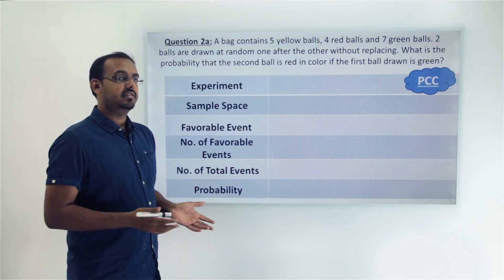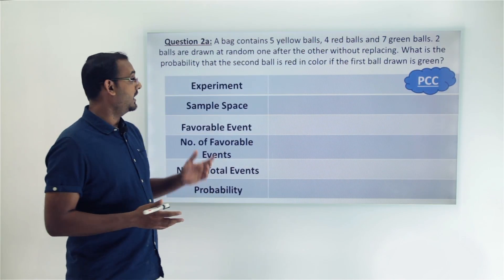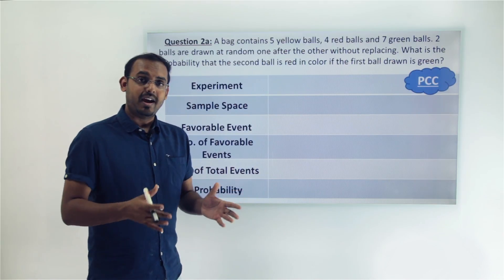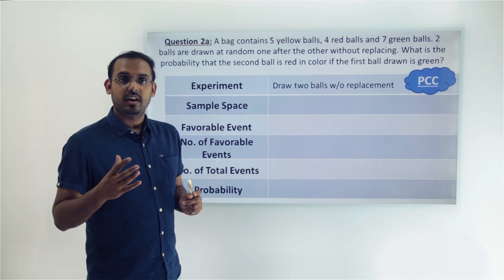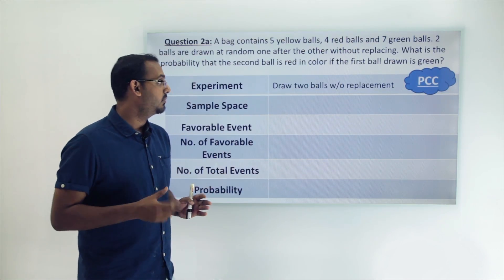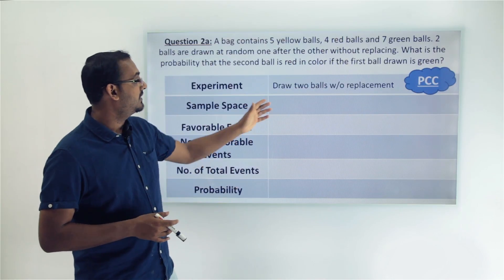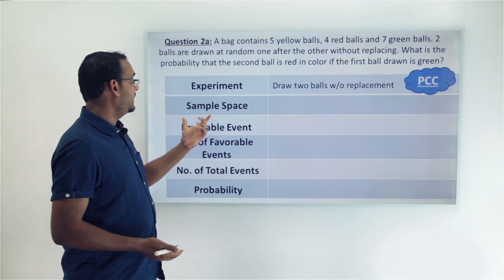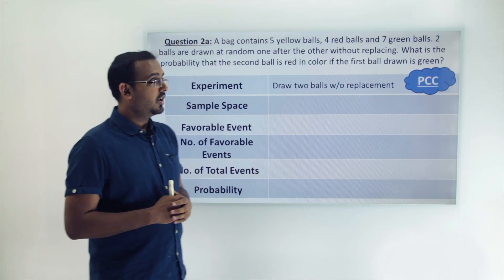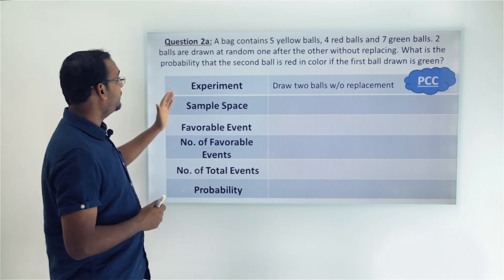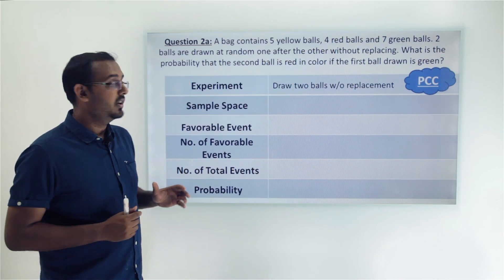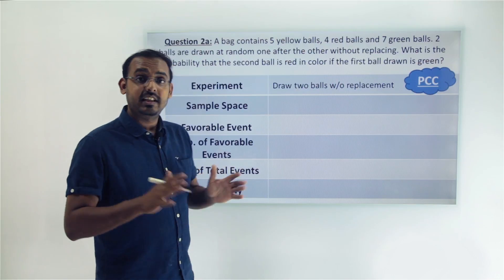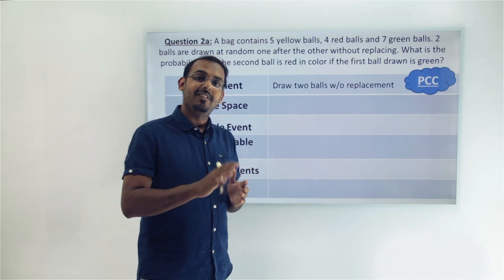We'll create a PCC to analyze this problem. The experiment we are performing is: we take the bag with 16 balls, draw one ball and keep it aside, then draw the second ball. So the experiment is drawing two balls without replacement from the bag. Now we figure out the sample space. In the first step, we took out a green ball and kept it aside, so the bag is now left with five yellow balls, four red balls, and six green balls.